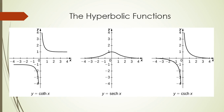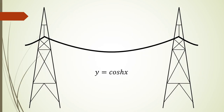What's the purpose of these functions? One such purpose, for instance, could be a cable suspending from two towers. This cable that is being suspended from two towers actually takes the shape of the hyperbolic cosine function. So that's one practical application.